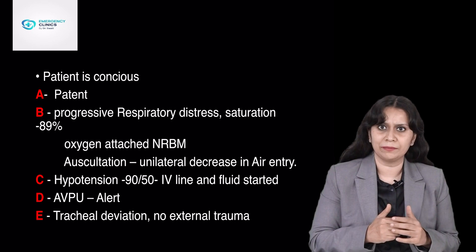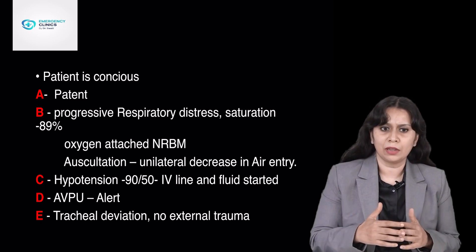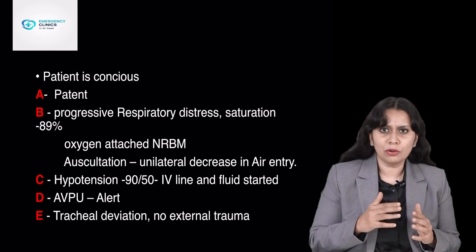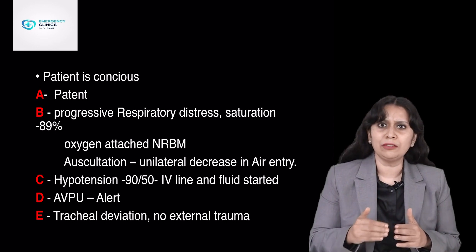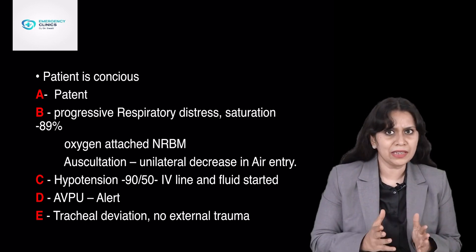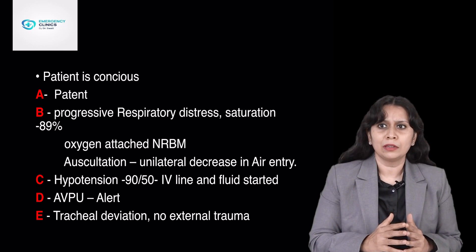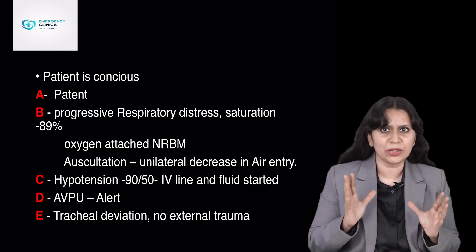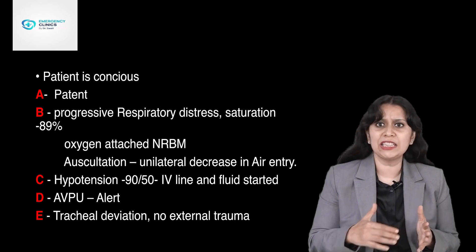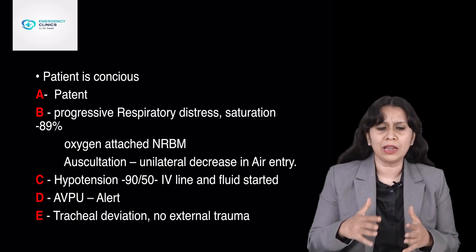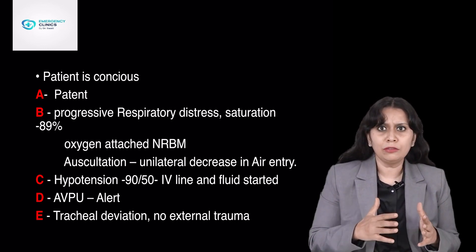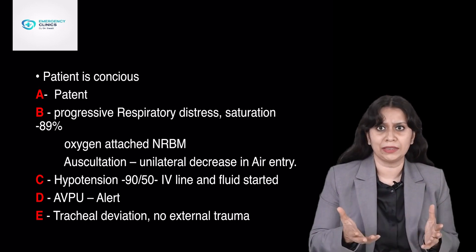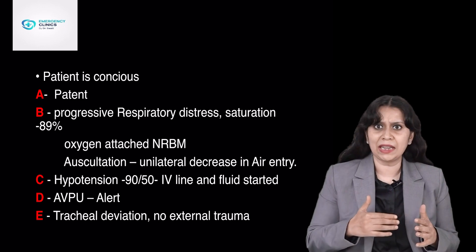Then I would go for C — circulation. The patient was having hypotension, so immediately an IV line and fluid had to be started. Then D, the disability — my patient was alert and responding, so neurologically the patient was intact. And E, exposure — I will expose the patient and look for any visible sign of trauma, blood loss, or anything.